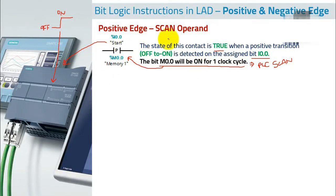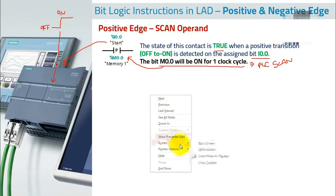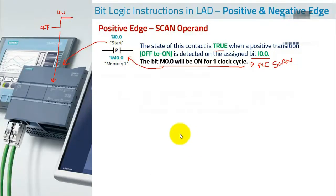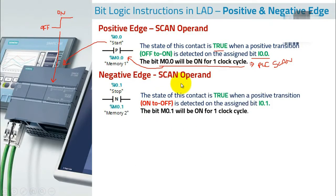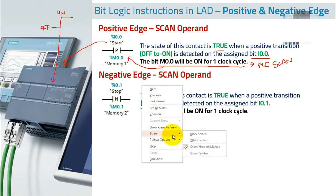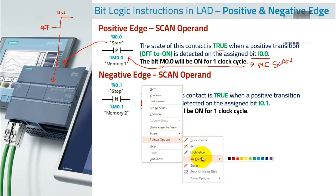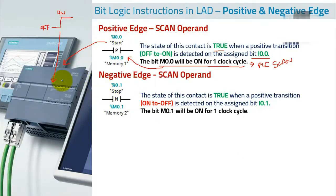So this is a positive edge. Now let's look at the negative edge scan operand, which has an 'N' in the middle. This is a contact again — here we have an input I0.1.